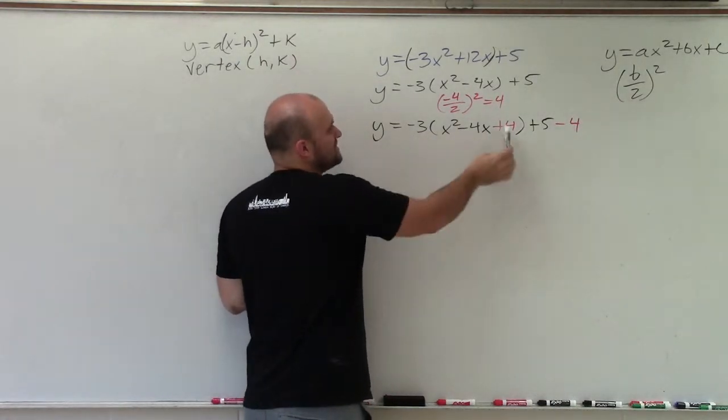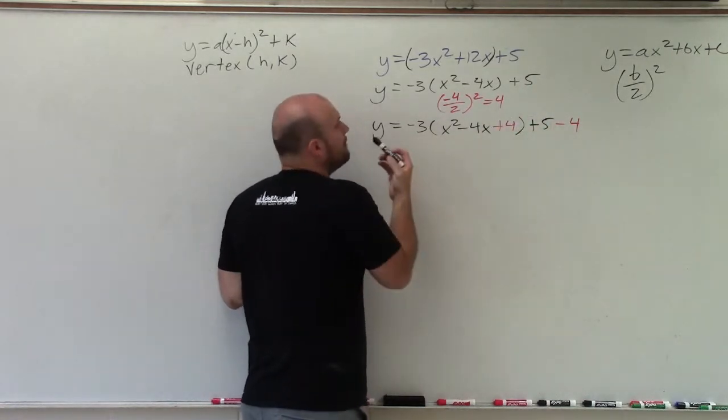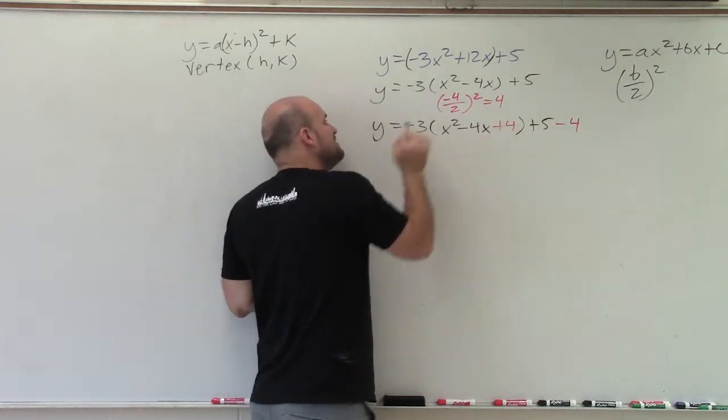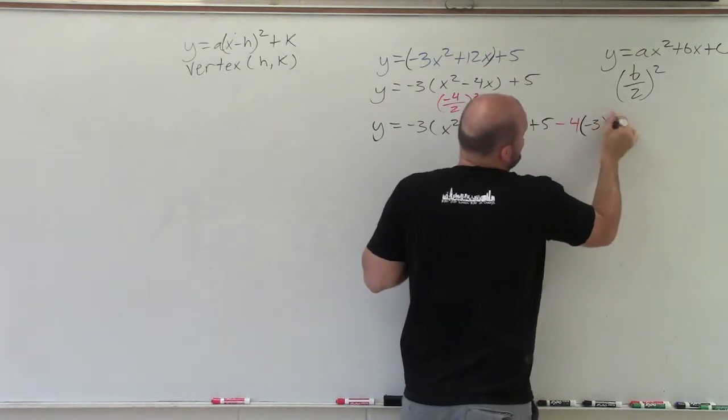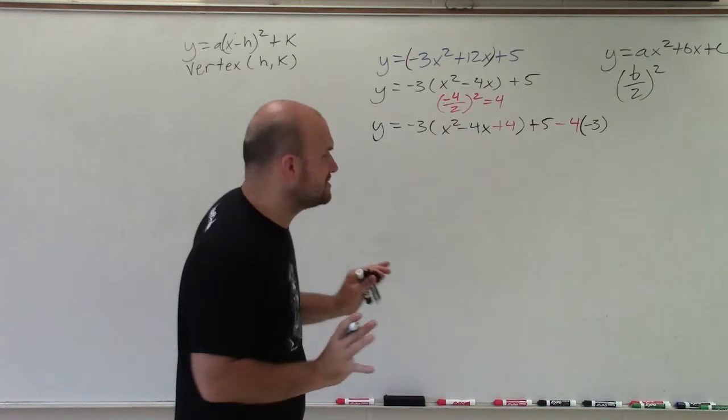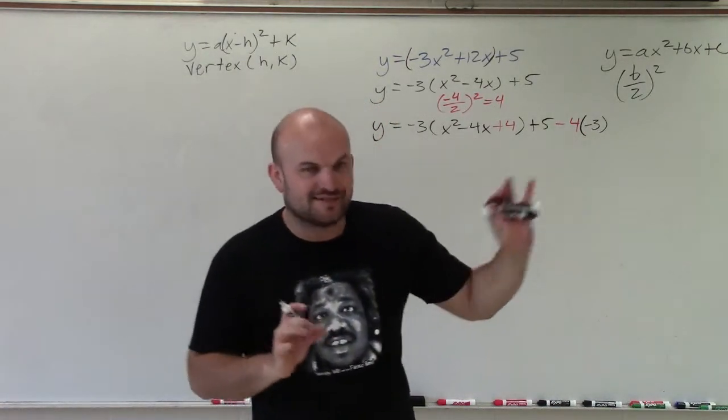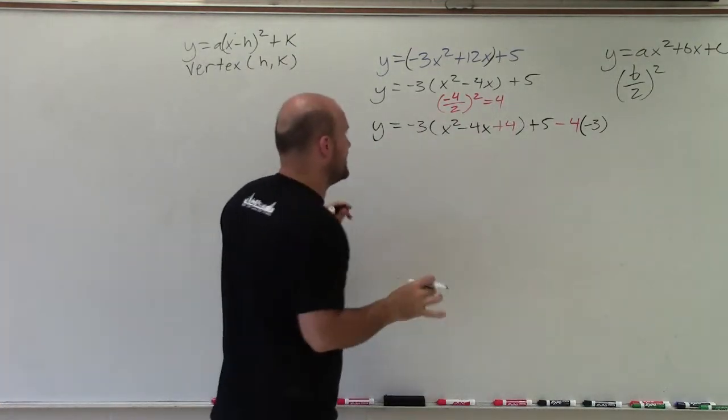So please note, since I added 4 in here, I have to subtract 4 in here, right? Obviously. But be careful, because when I added the 4 inside the parentheses, that inside the parentheses is being multiplied by a negative 3. So when I subtract it outside the parentheses, I still need to multiply it by a negative 3. Very, very important. And you can quickly forget about it, because I was going to try to write something, and I even forgot about it. So be very, very careful with that.